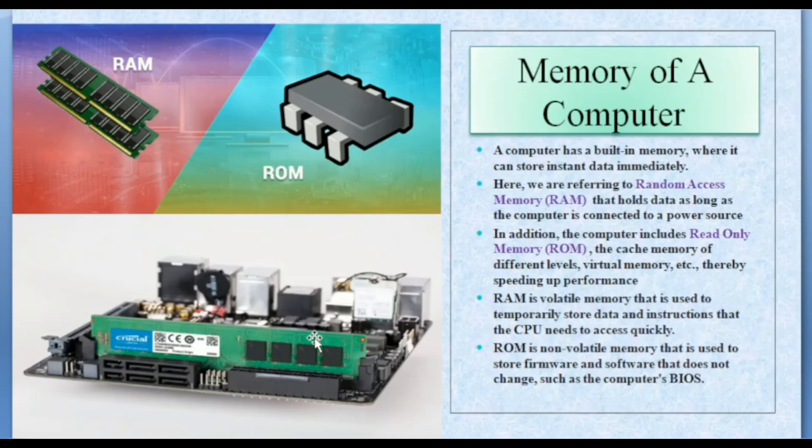Additionally, computer has hard drive inside CPU to store the output data if you want to store them. And these memories are secondary memories, whereas RAM and ROM are primary memory of computer, and they are much faster than the secondary devices like hard drive.